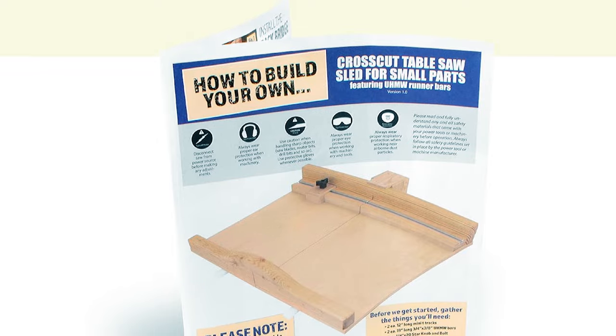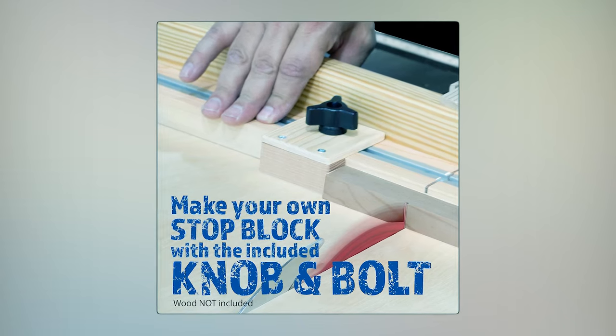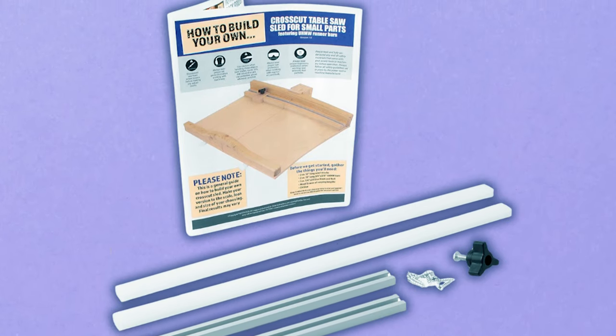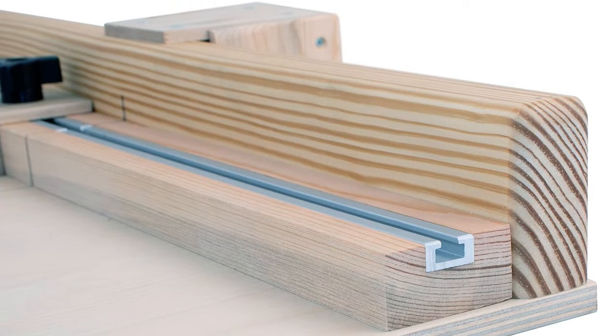The solid extruded aluminum tracks are made in the USA and come with a knob and bolt for an adjustable stop block. The included guide booklet ensures that your sled building process is hassle-free. Make repetitive cuts and small cuts a breeze with this kit, tailored to fit your table saw and specific needs.